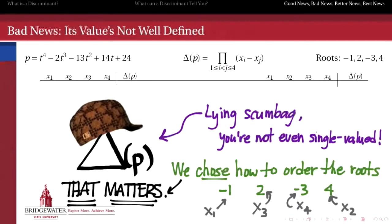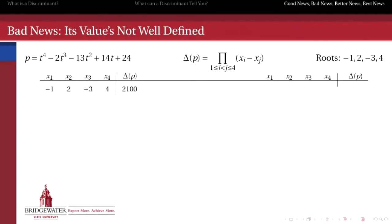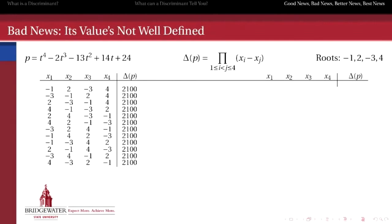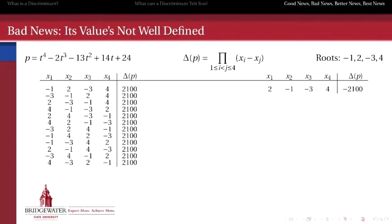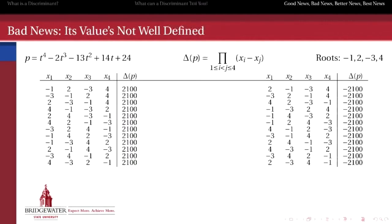Let's verify that in as brutal a fashion as possible for this quartic. If I order those four roots just as shown — negative 1, 2, negative 3, and 4 — I compute a value of 2100 for the discriminant. I could pick a different ordering and also get 2100, and then another different ordering and get 2100, and so on. There are a lot of different ways to order these four roots. All 12 of these possible orderings give us the same answer of 2100. But of course, some orderings disagree — this ordering, 2, negative 1, negative 3, 4, comes out with a discriminant of negative 2100. Neither do these other 11 orderings. So we've got 12 orderings giving 2100 and another 12 giving negative 2100.